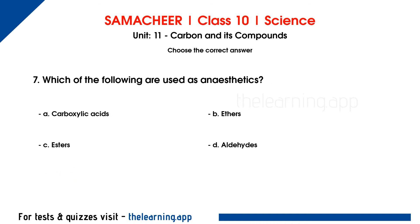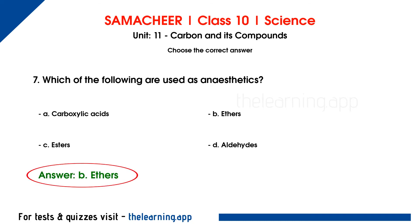Seventh question. Which of the following are used as anesthetics? Options are A. Carboxylic acid, B. Ethers, C. Esters, D. Aldehydes. Correct answer is option B, ethers. Ethers are used as anesthetics.